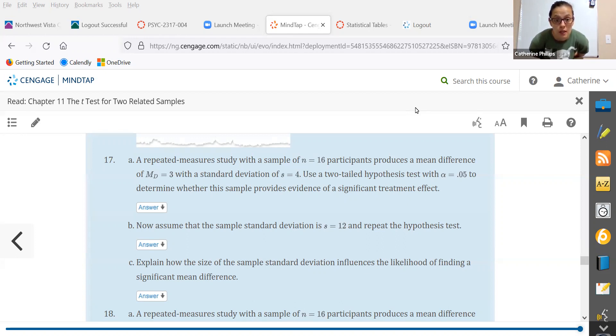A repeated measures study with a sample of n equals 16 participants produces a mean difference of m subscript d equals 3 with a standard deviation of s equals 4. Use a two-tailed hypothesis test with an alpha of 0.05 to determine whether this sample provides evidence of a significant treatment effect.